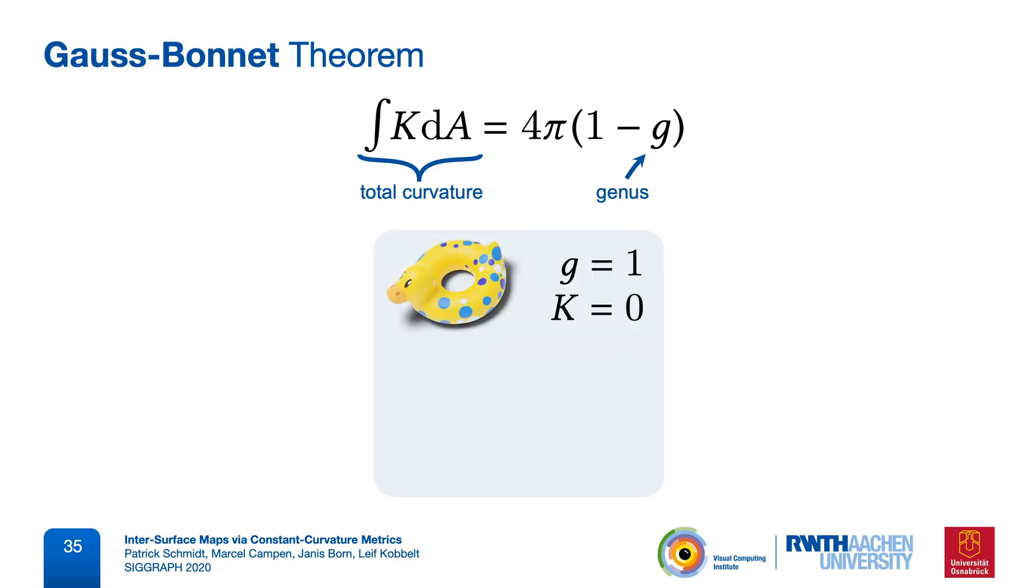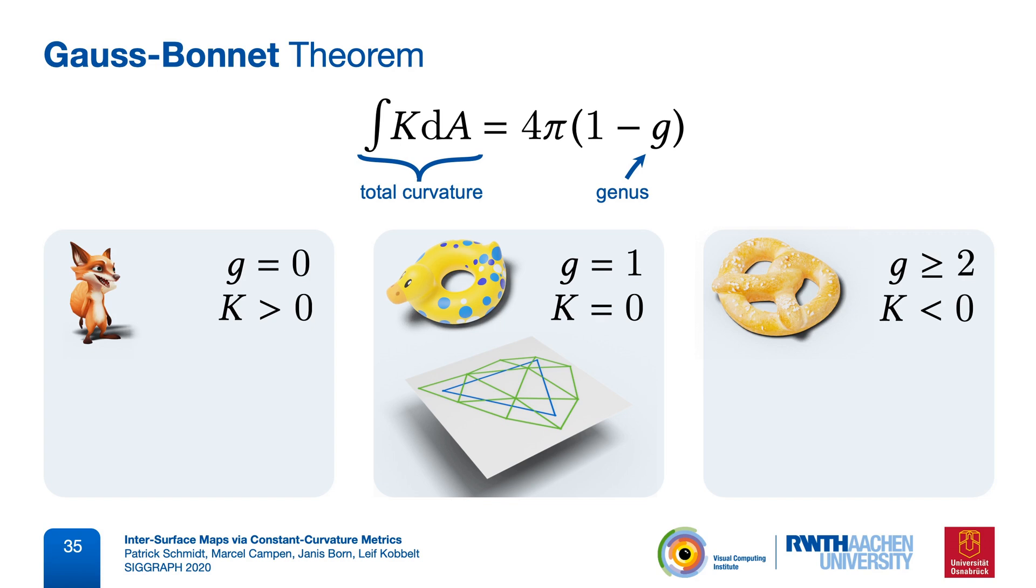Only for genus 1, this curvature integral is zero, so that we can actually use a flat metric. For genus 0, this integral is positive. And for genus 2 and higher, it will always be negative. For those cases, we want to generalize the idea of no curvature everywhere. And we do this by choosing constant curvature everywhere instead.